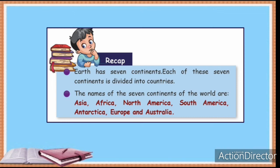Next is Europe. Europe and Asia are part of the same major landmass, called Eurasia. Asia and Europe are separated by the Ural Mountains and the Caspian Sea. The world's smallest country, Vatican City, is situated in Europe. Countries in Europe include the United Kingdom, France, Spain, Germany, Norway, Greece, Austria, and Italy.